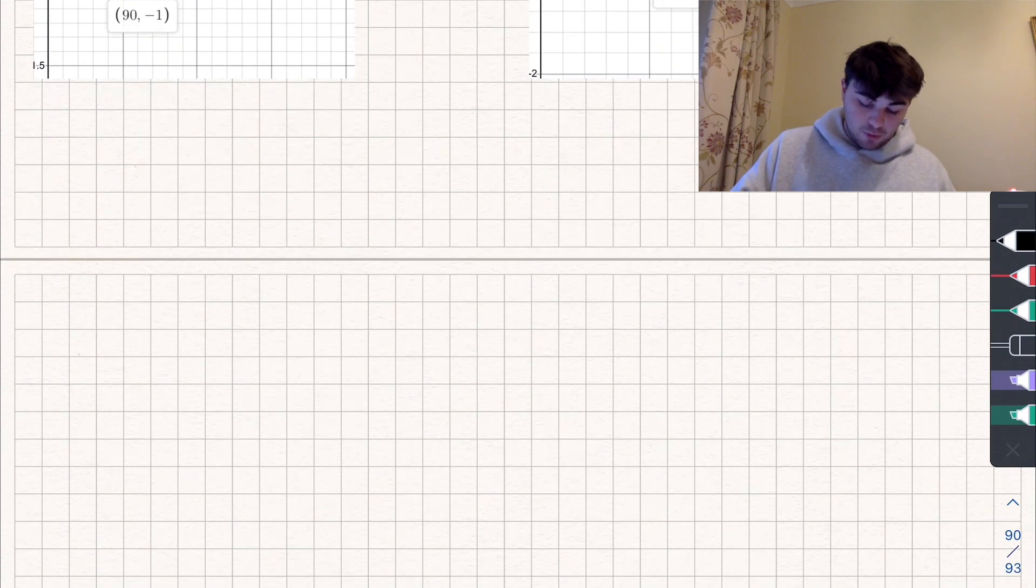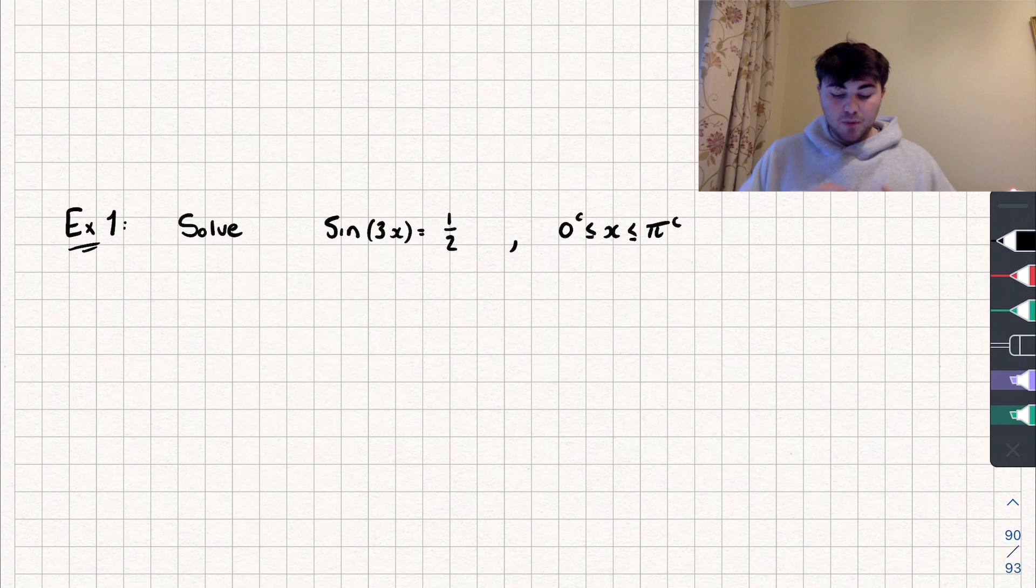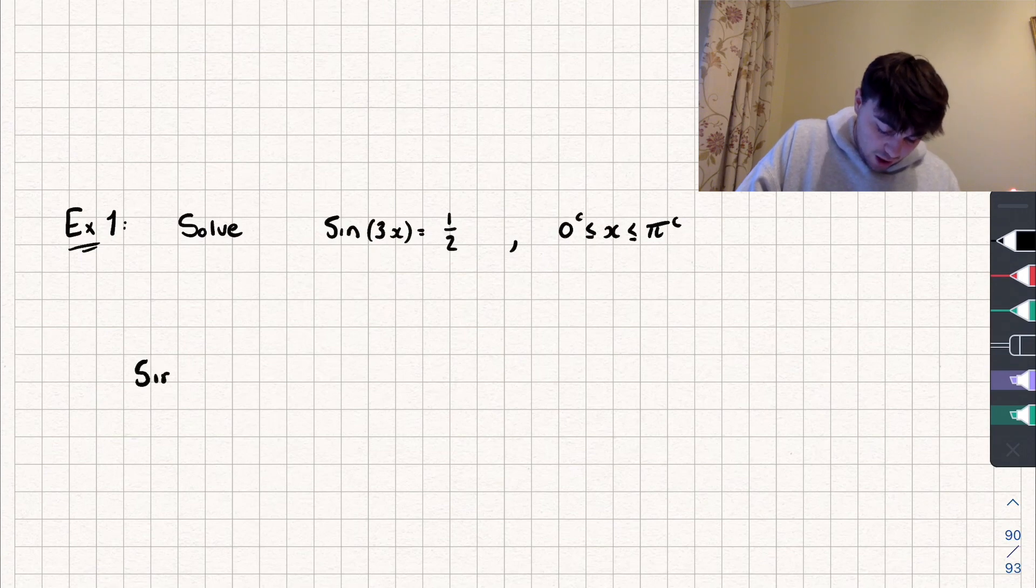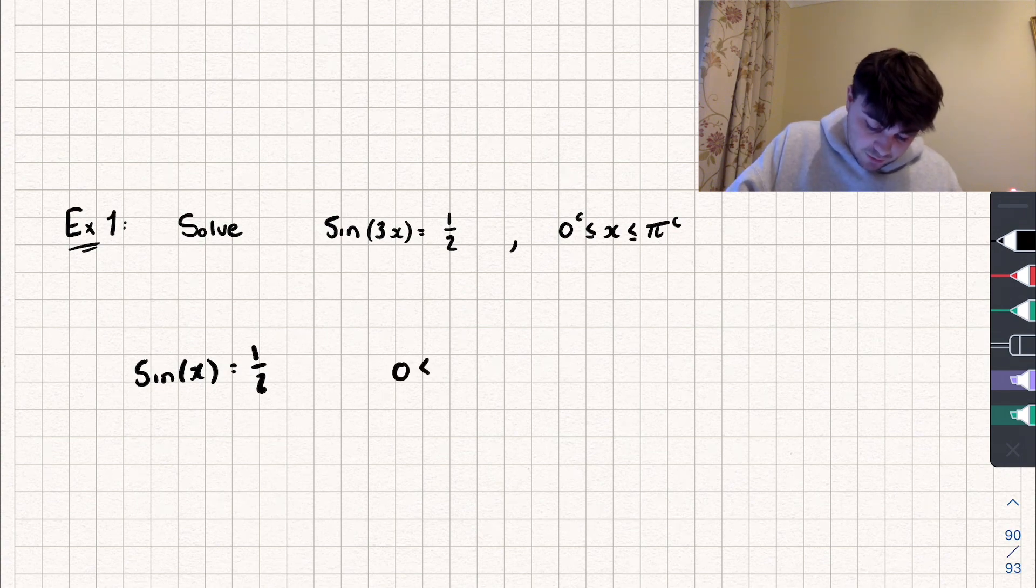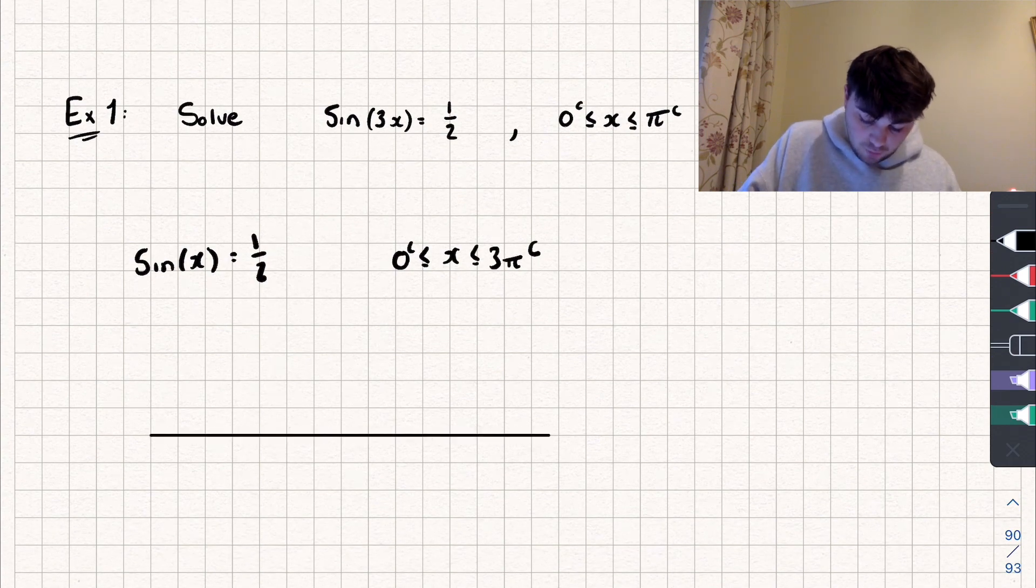So let's now look at a second example. And for this one, we're going to work in radians, and we're looking to solve sine of 3x equals 1 half between 0 and pi radians. So remember what I said, I'm not going to solve that. I'm going to solve sine of x equals 1 half in the range of, well, I'm going to multiply everything by 3, so I'm looking in the range of 0 radians up to 3 pi radians.